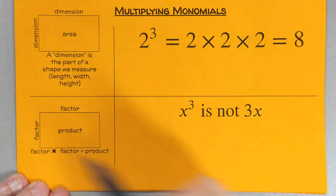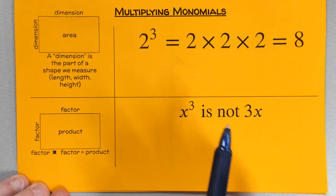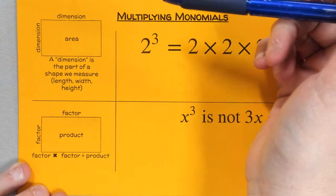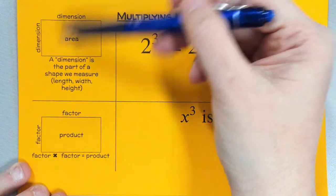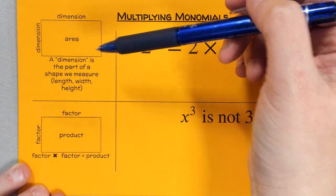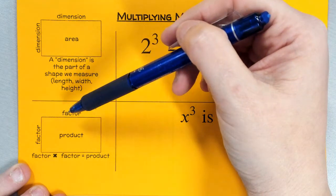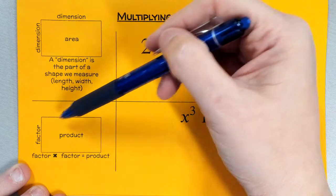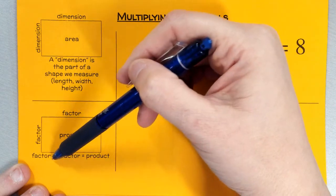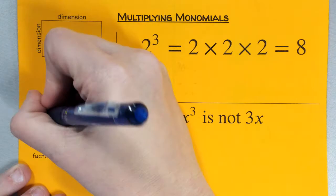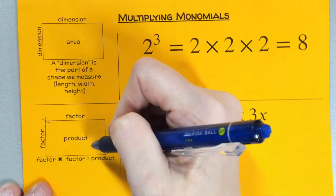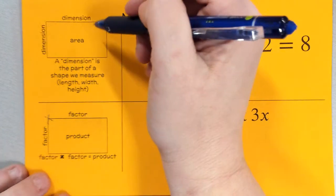So first we want to go over some prerequisites — some ground rules, prior stuff that you should know. We have a little vocabulary. When we talk about multiplying, the math words are: factor times factor equals product. So if I multiply two factors together, they're going to result in a product.